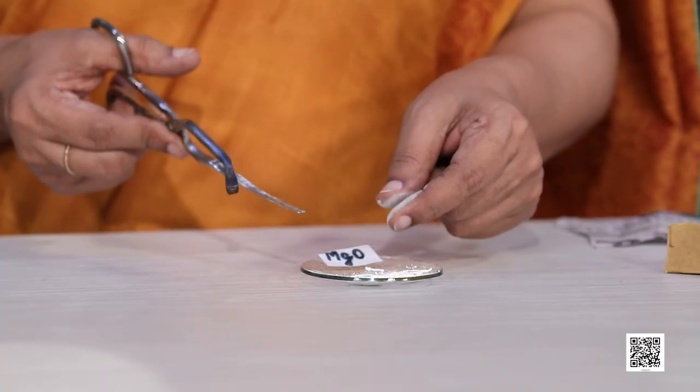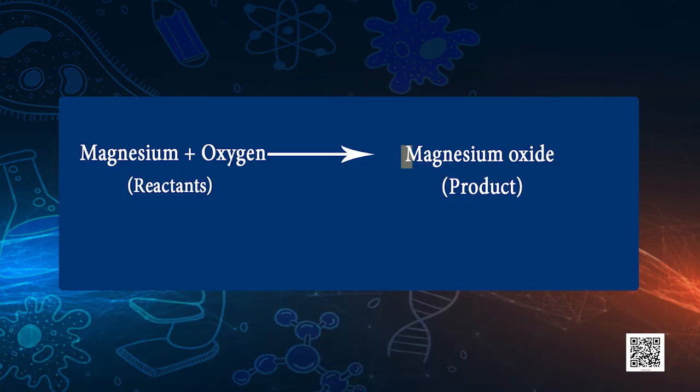Can you name this white powder? Magnesium has reacted with oxygen present in the air. It is magnesium oxide, formed due to the reaction between magnesium and oxygen. So can you guess now why the magnesium ribbon should be cleaned before burning in air?